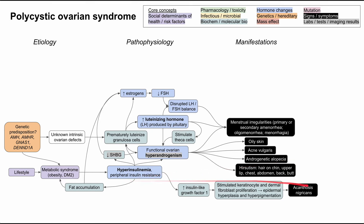The high insulin state also causes a manifestation. When you have high insulin, you will also have high insulin-like growth factor 1, and this stimulates keratinocyte and dermal fibroblast proliferation, which results in epidermal hyperplasia and hyperpigmentation. The end result is acanthosis nigricans — patches of dark, thickened skin that you tend to see in people with uncontrolled type 2 diabetes and also in some cases with PCOS.